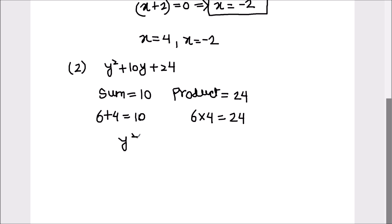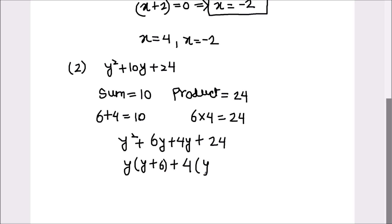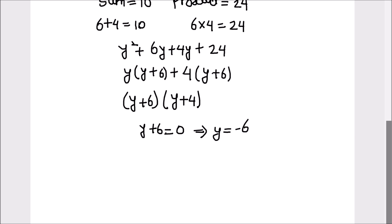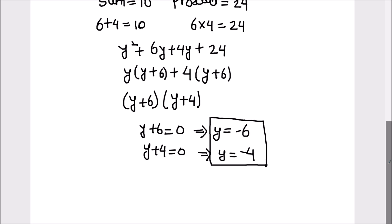So this will be y squared plus 6y plus 4y plus 24. From here we take y common, giving y plus 6, then take 4 common, also giving y plus 6. Taking y plus 6 common from both terms gives us y plus 6 times y plus 4. Setting y plus 6 equals 0 gives y equals negative 6, and y plus 4 equals 0 gives y equals negative 4. So the zeros of this polynomial are y equals negative 6 and y equals negative 4.